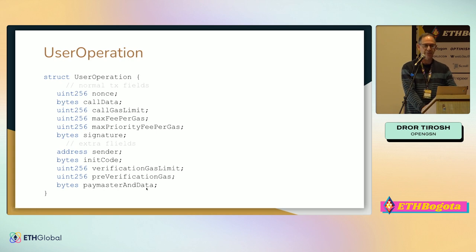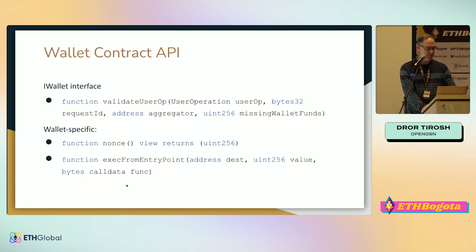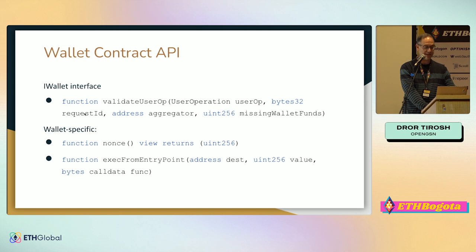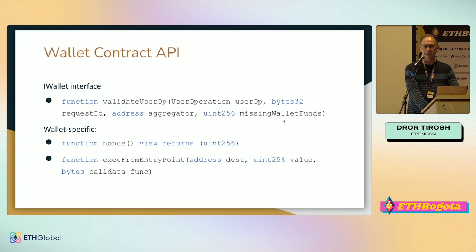And finally there is the paymaster information — if there is a paymaster, it will be specified there. What must the wallet define? The API we provide specifies the function validate user operation in the iWallet interface. This is the only function we mandate by name. It receives the entire user operation and the request ID, which is basically a hash of the user operation — this is what gets signed — and it needs to validate the signature. Missing wallet funds is the top-up value the wallet has to pay; if no one else pays and there is no balance, it has to pay this to the entry point for the transaction to succeed. If validate user op reverts, the transaction will fail and it will not pay anything.